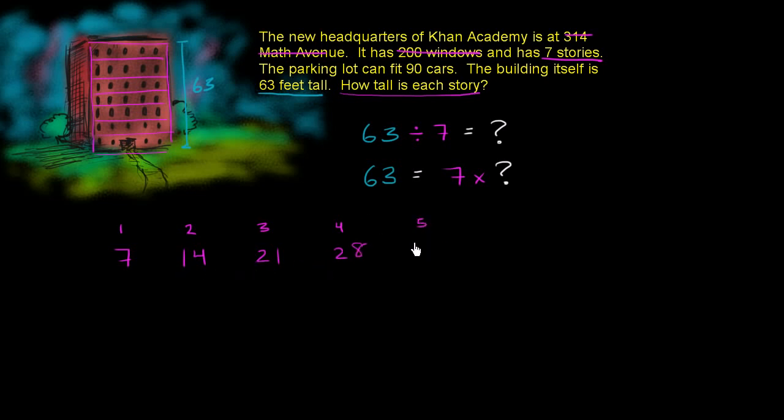Seven times five is 35. Seven times six is 42. Seven times seven is 49. Seven times eight is 56. Just adding seven. Seven times nine is 63.